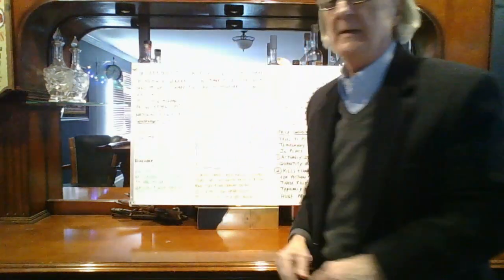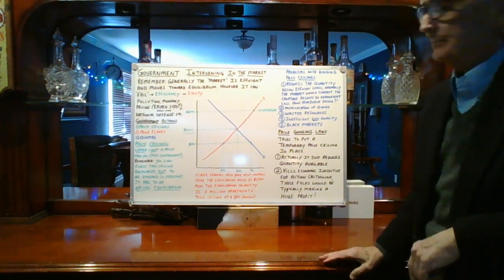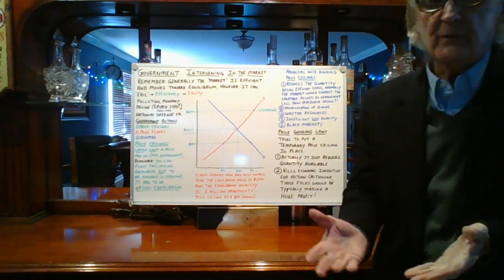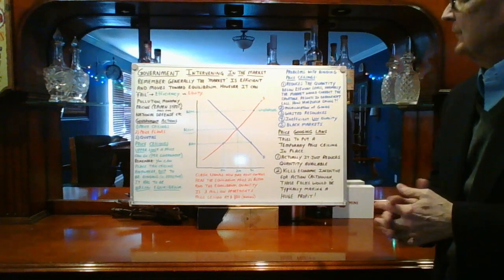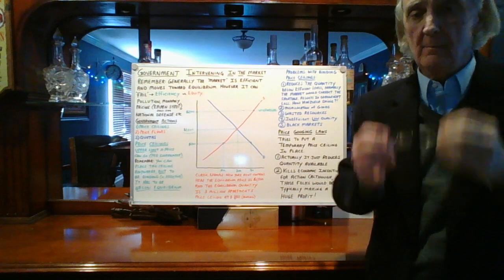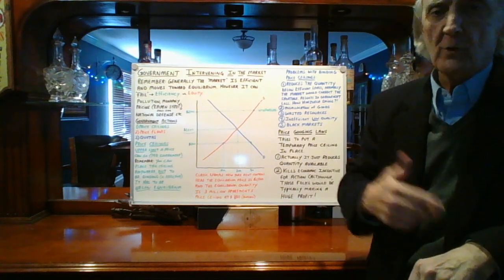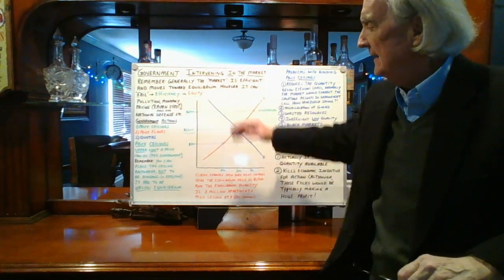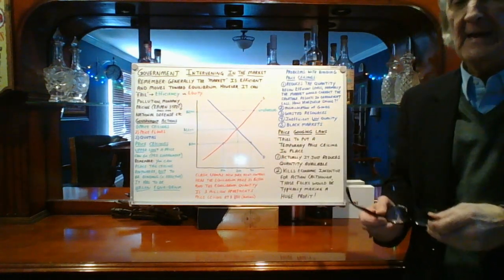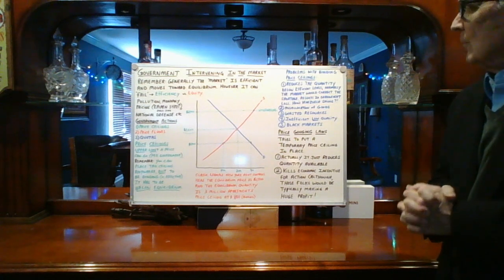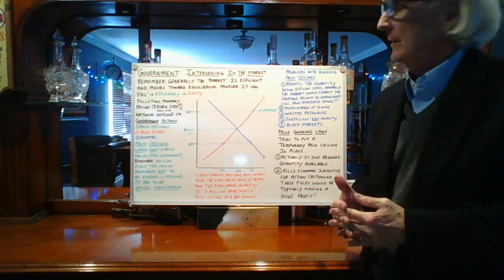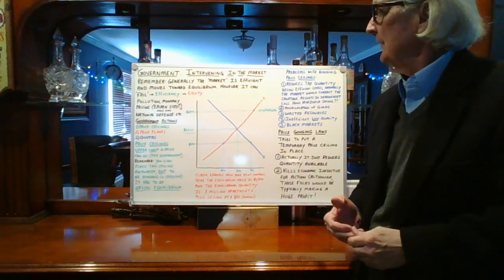This is government intervening in the market. The market generally is efficient and does generally move towards equilibrium — as we talked about earlier in the course, we had a surplus or shortage and market pressure would build, bringing us back to equilibrium. And this usually works. However, the market can fail. When that does happen, government intervention is needed. Examples include the EpiPen and National Defense. The three government actions are: price ceilings, price floors, and quotas.